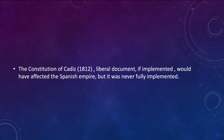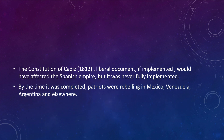The Constitution of Cádiz in Spain was written in 1812 — a liberal document that, if implemented, would have affected the entire Spanish Empire. But it was never fully implemented, and one of the first decrees King Fernando VII issued when he became king was to nullify the Constitution of 1812. By the time it was completed, patriots were already rebelling in Mexico, Venezuela, Argentina, and elsewhere. There were revolts happening all over Latin America, which we'll learn about in more detail in the next videos.